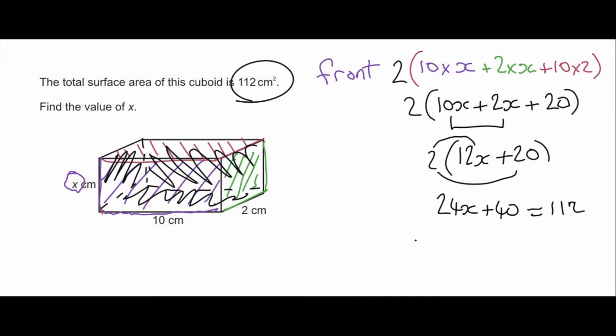Okay so to get rid of the 40 remember you're doing the inverse function. So take away 40 from both sides. That's going to give me 24x equals, the 40s will cancel, 40 away from 112 is going to give me 72. And if I then divide down by the coefficient of x, divide down by 24, the 24s cancel and just leaves me x.